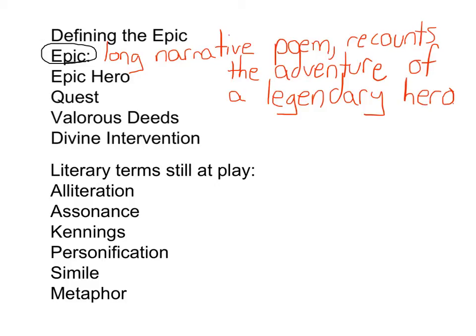The epic is composed of four parts. The first part is that there is an epic hero — the legendary hero. The epic hero is the central character of an epic, a larger-than-life figure, typical of noble or semi-divine birth. In this case, he's of noble birth; his uncle is Higlak the King. The epic hero will go on a quest — a long, dangerous journey or mission undertaken by the epic hero. It's the opportunity for the hero to show his heroism.